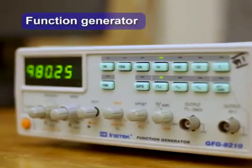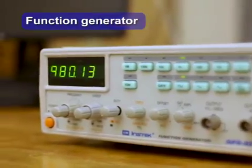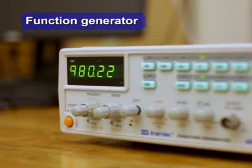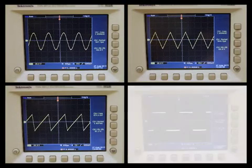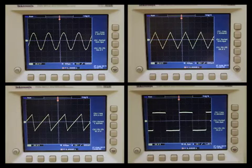A function generator produces signals for other equipment needing an excitation or drive voltage. The most common periodic outputs are sinusoidal, triangular, sawtooth, and square waves, which may be adjusted in amplitude, frequency, and DC offset.